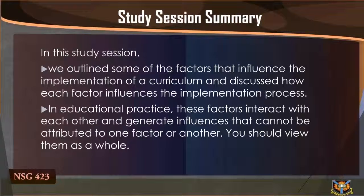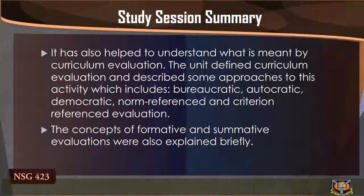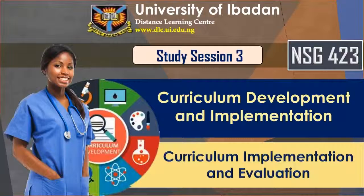Study section summary. In this study section, we outlined some of the factors that influence the implementation of a curriculum and discussed how each factor influences the implementation process. In educational practice, these factors interact with each other and generate influences that cannot be attributed to one factor or another — you should view them as a whole. The unit defined curriculum evaluation and described approaches including bureaucratic, autocratic, democratic, norm-referenced, and criterion-referenced evaluation. The concepts of formative and summative evaluation were also explained briefly. Now we've come to the end of the study section. Thanks for listening.